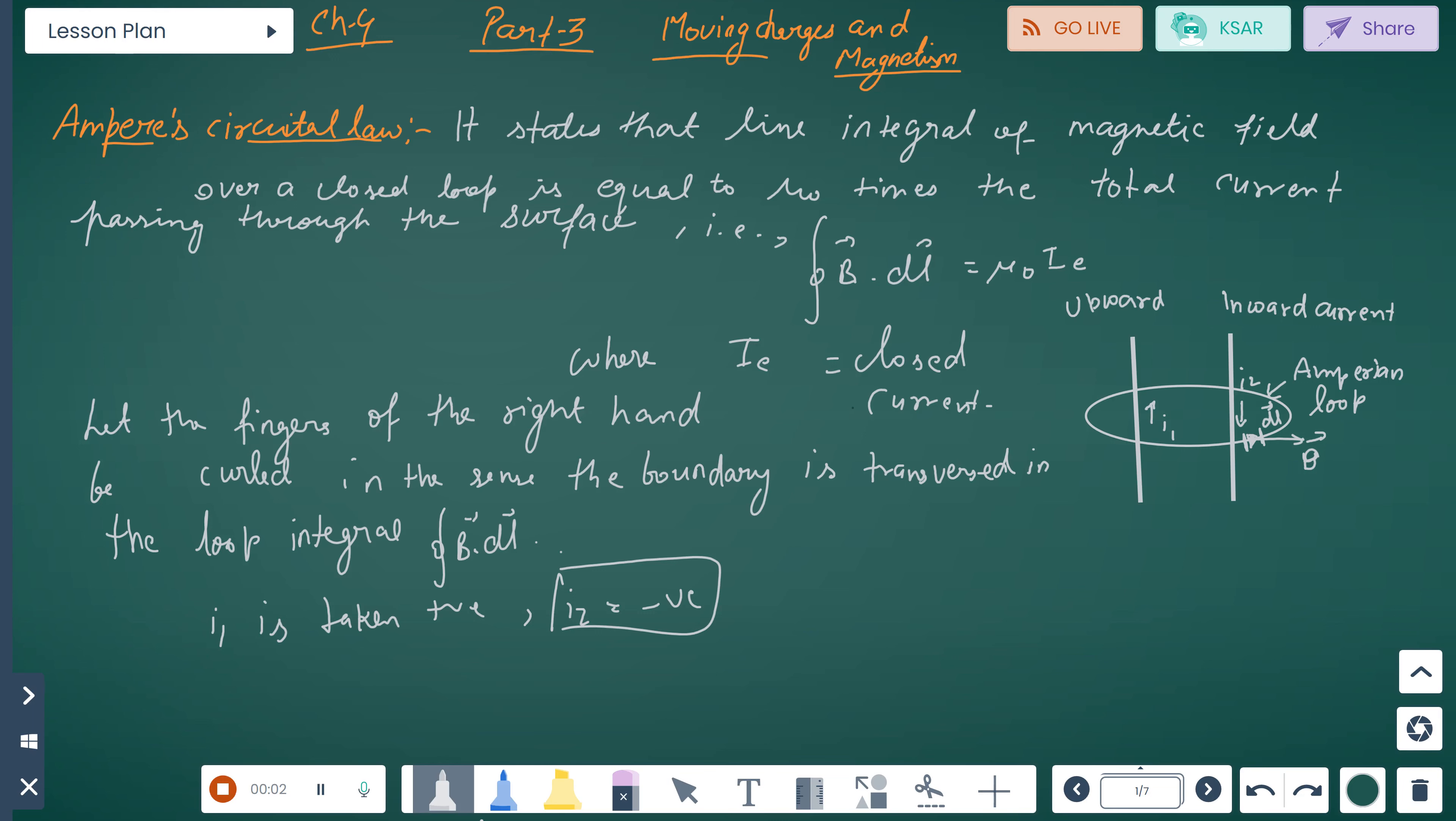Now start with another part, Part 3: Moving Charges and Magnetism, Chapter 4, Class 12 Physics. First topic is Ampere's circular law. Ampere's circular law states that the line integral of magnetic field over a closed loop is equal to μ₀ times the total current passing through the surface. So B·dl = μ₀I, total current passing through the surface.